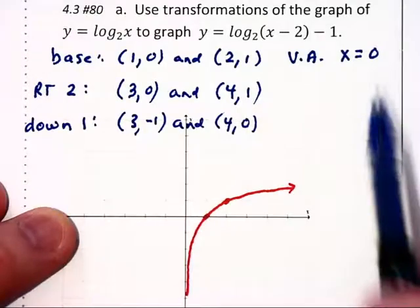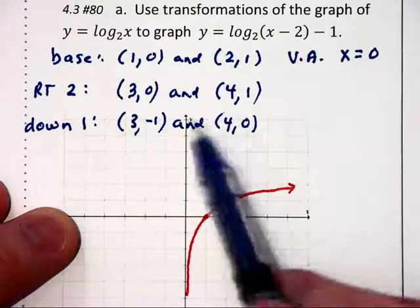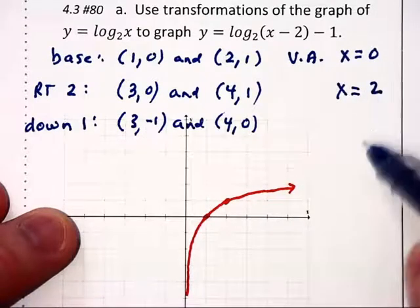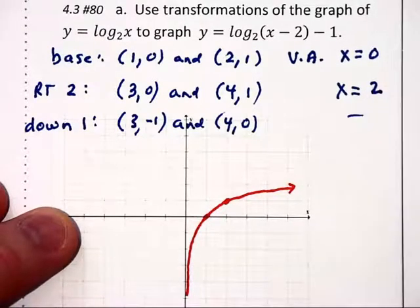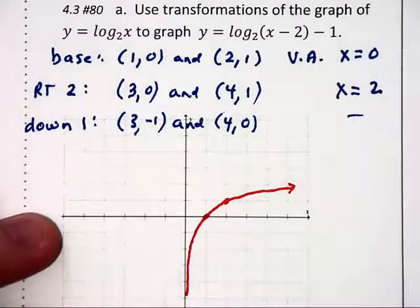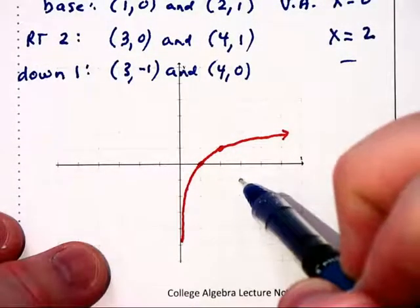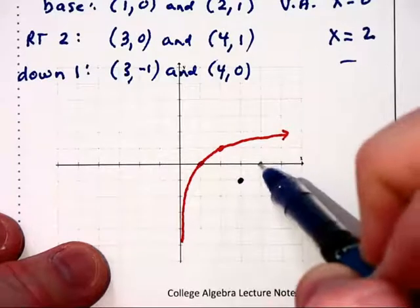Let's see what happens with our vertical asymptote. When we move 2 to the right, we're now going to have x equals 2, and moving it up or down 1 is not going to have an effect on our graph. So let's take a look at what we've got. We now have 3, negative 1, and 4, 0.